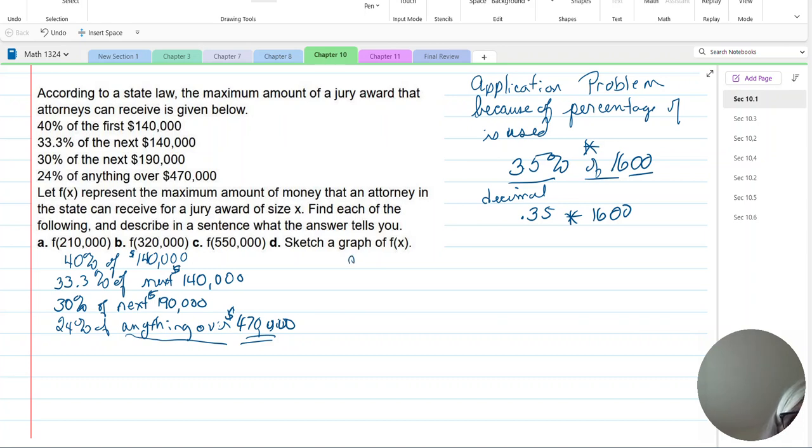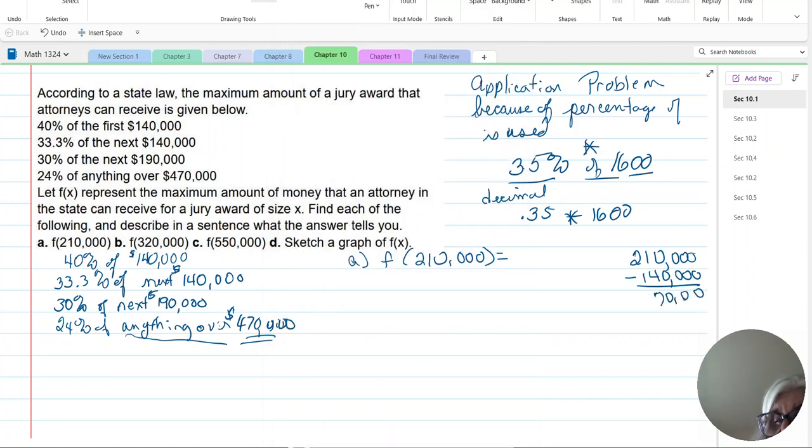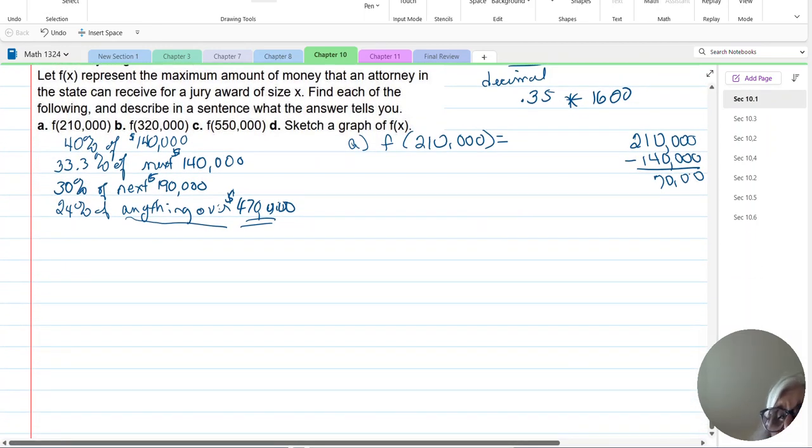So we're going to do the A. F of $210,000. So what do we have here? So let's look at the money part first. $210,000. And we're going to subtract the $140,000 to see what's left. That's $70,000. So I have the $70,000 that is left over from the $210,000. So we've got one group of $140,000 and then $70,000 for the next group.